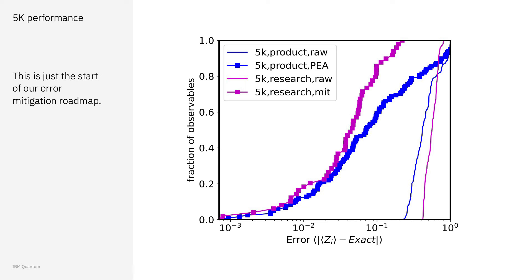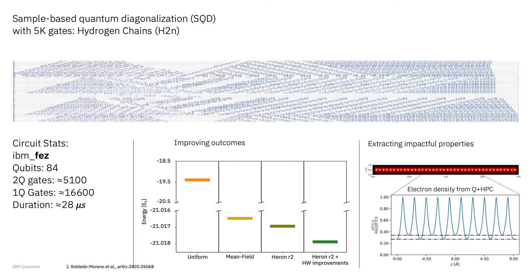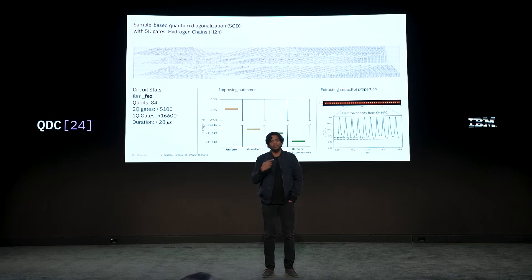We're already seeing evidence of further progress. With newer methods that will be introduced in the stack soon, we can achieve close to 90% of observables passing the 10% threshold at the 5k scale. We've also extended the reach of sample-based quantum diagonalization to the 5k scale, extending previous research with Reakin at the 3.6k scale. These methods are available in our Qiskit add-ons and are a powerful example of classical HPC and quantum joining forces.